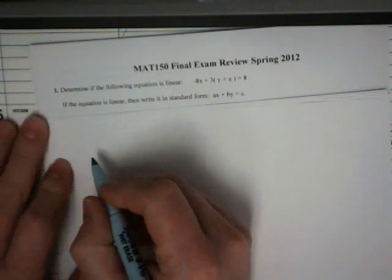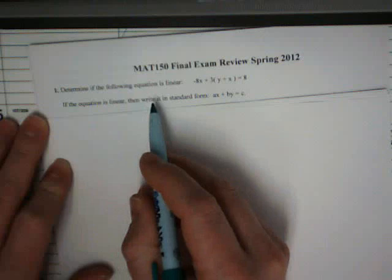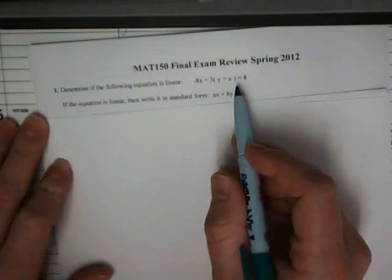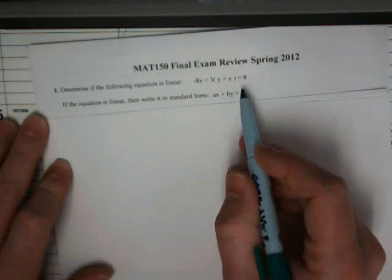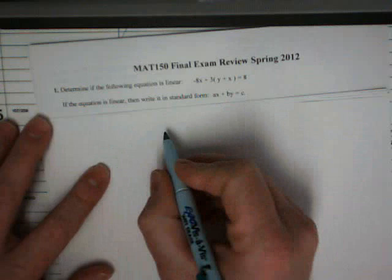Okay, so we'll start our number one here for the final exam review. It says, determine if the following equation is linear: negative 8x plus 3(y plus x) equals 8. And if the equation is linear, then write it in standard form. So what we want to do with this is try to simplify it and put it in that form, ax plus by equals c.